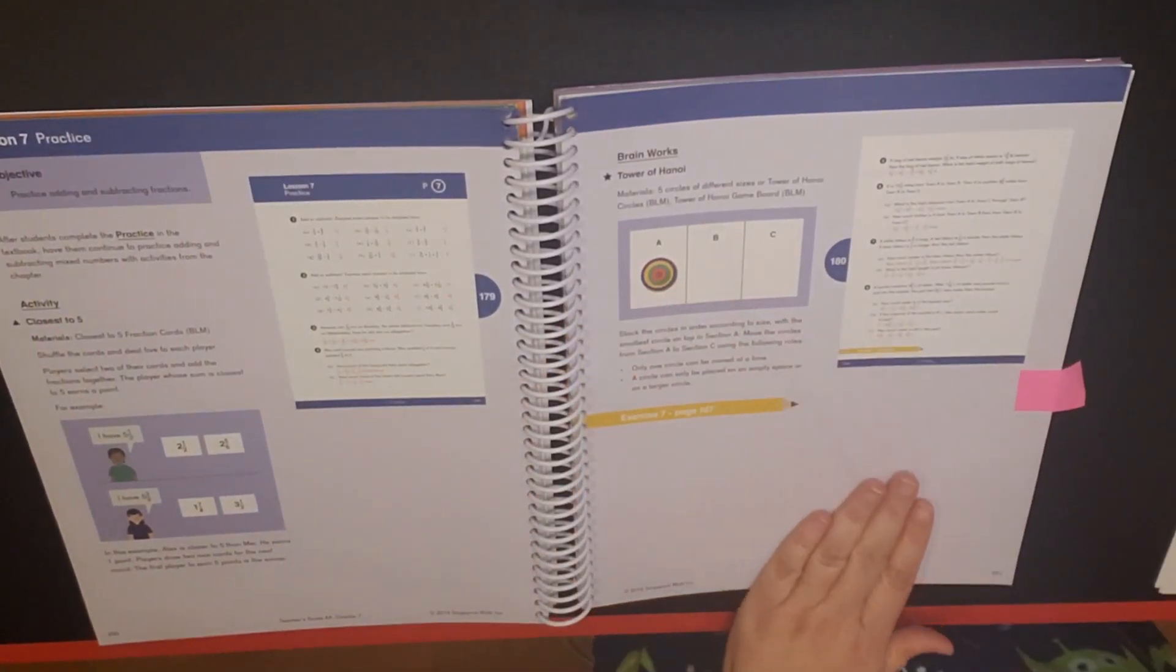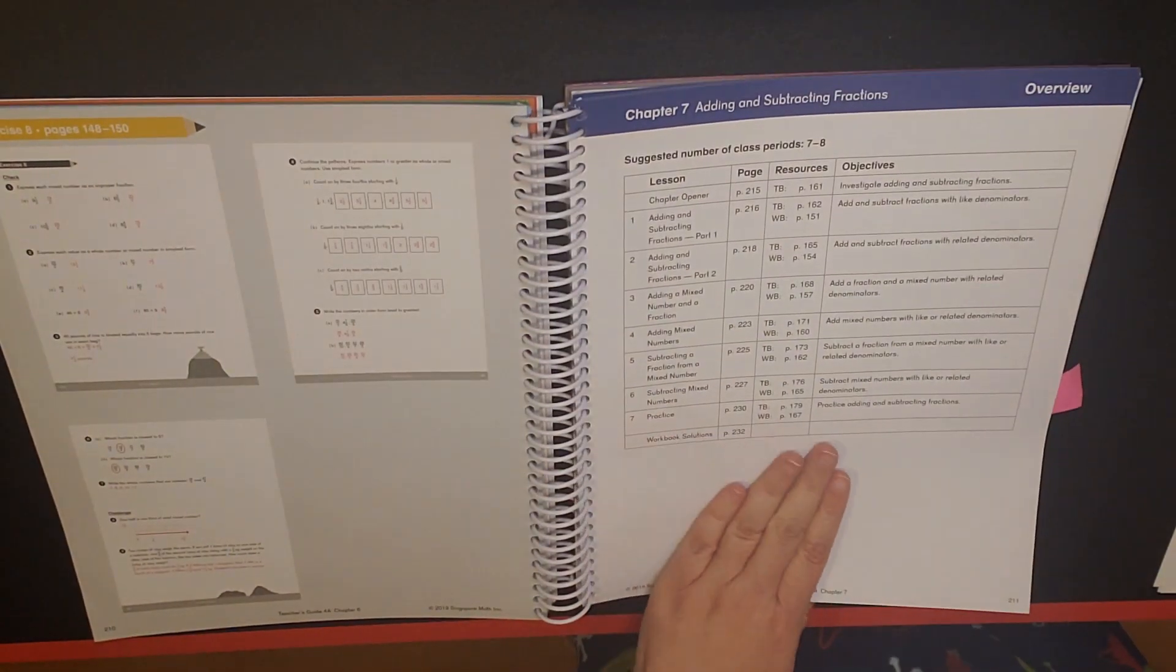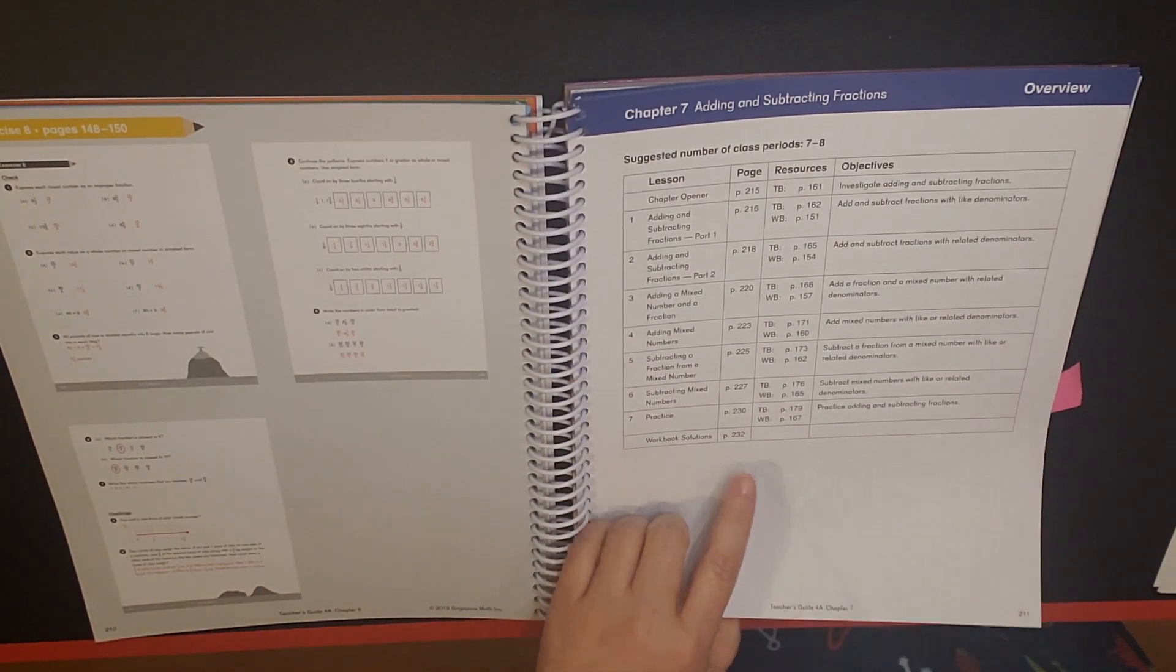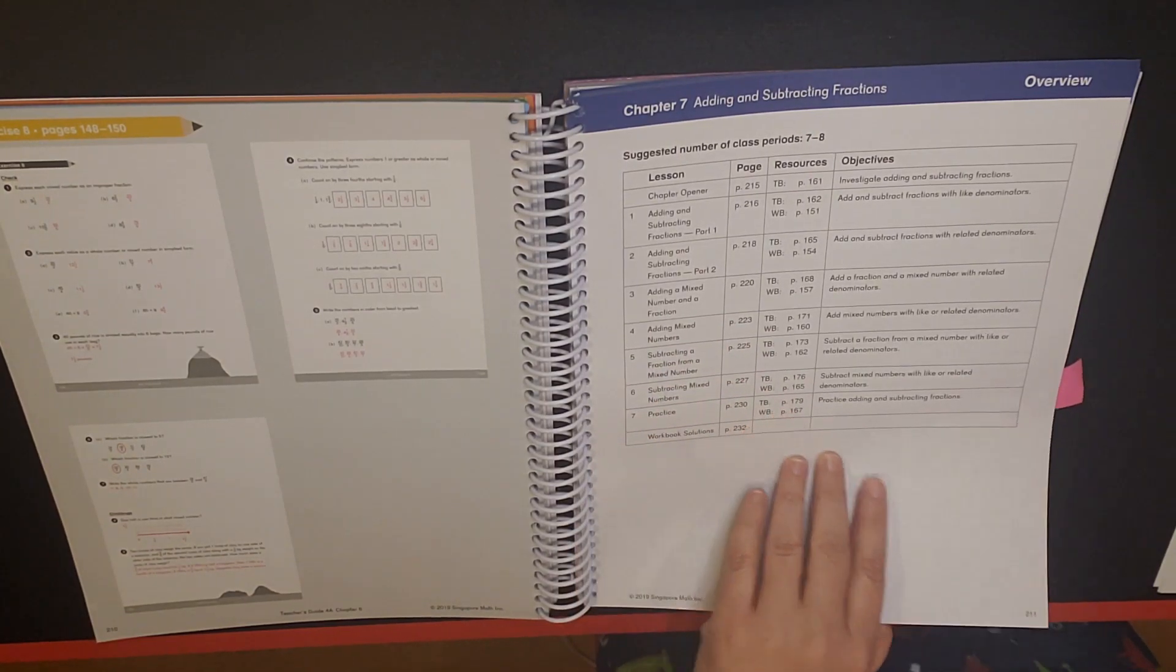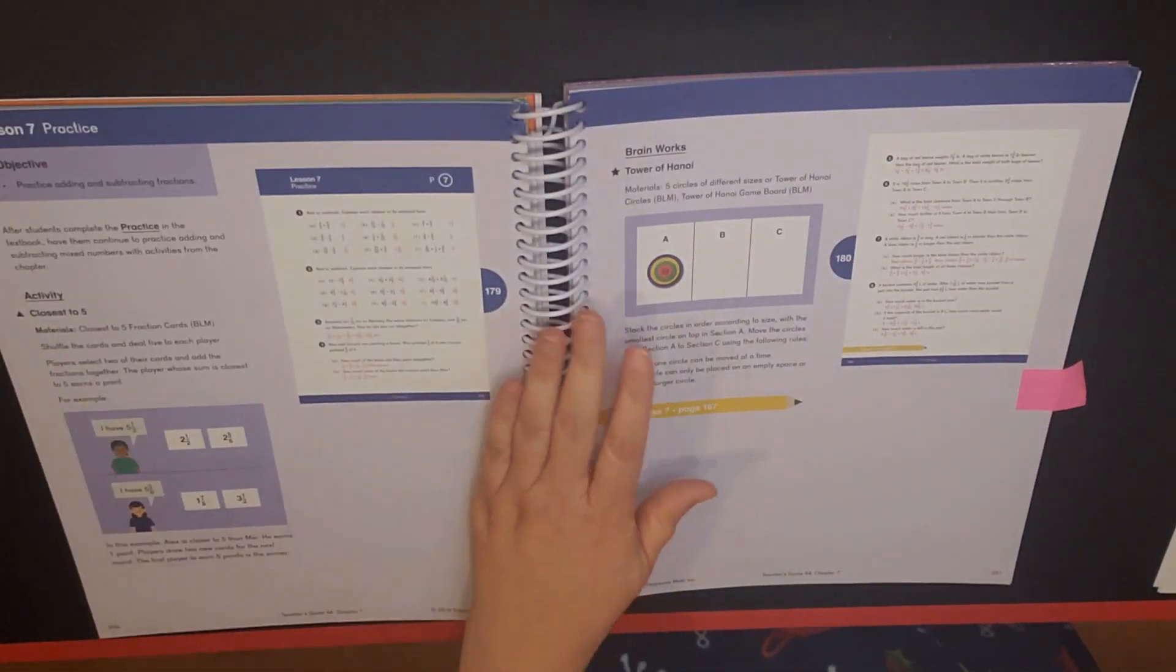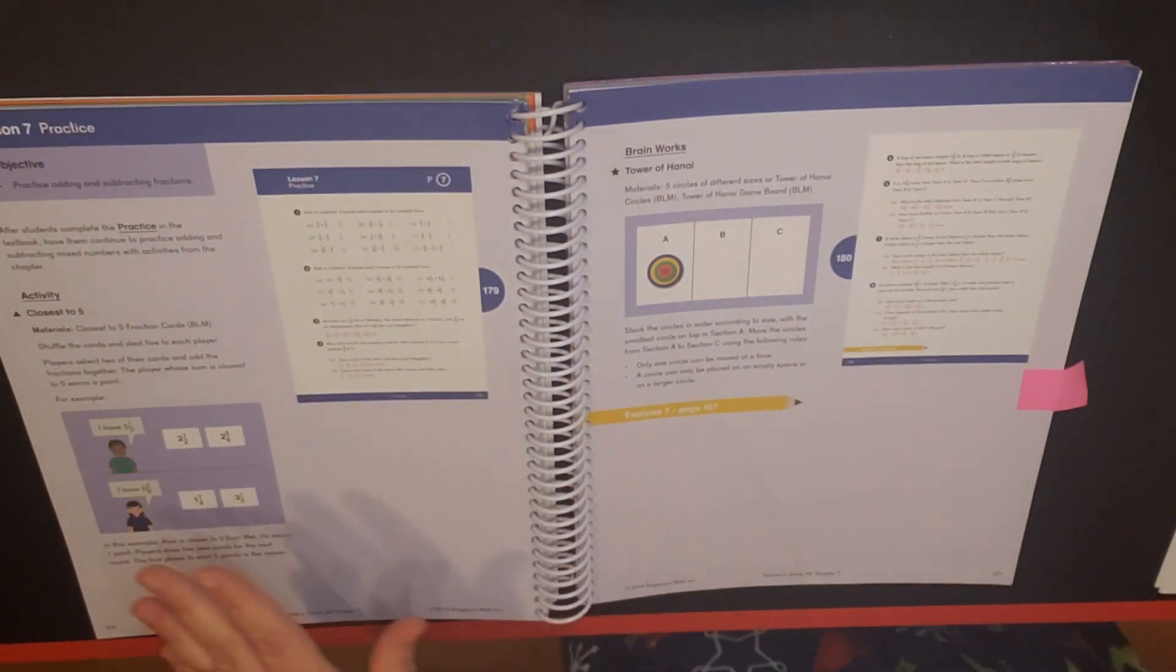So let's just take a look at another lesson. This is lesson seven where we are practicing. Now, if you just flip back to chapter seven overview, you can see where we have already done all of our lessons and now we have practice.